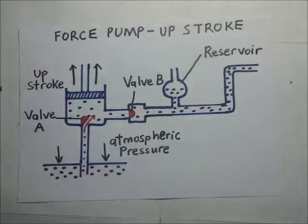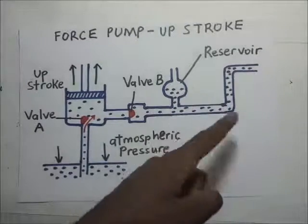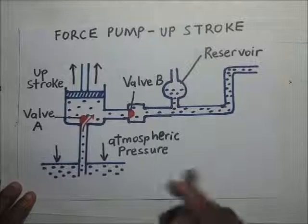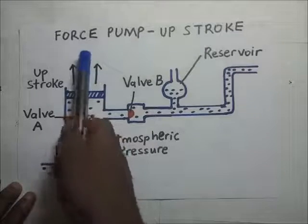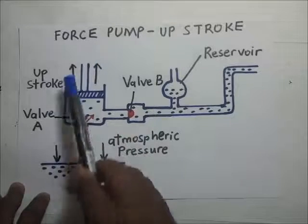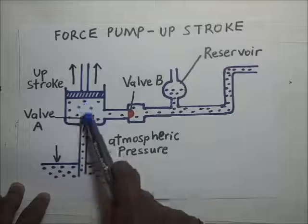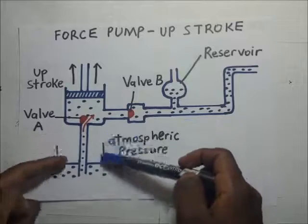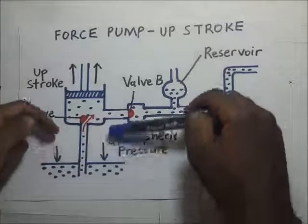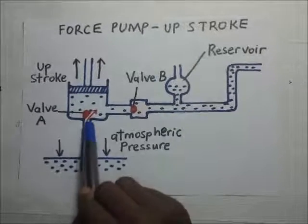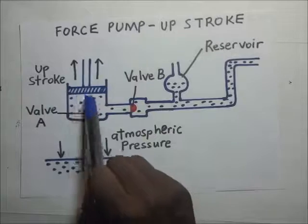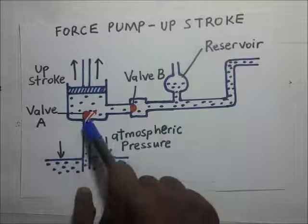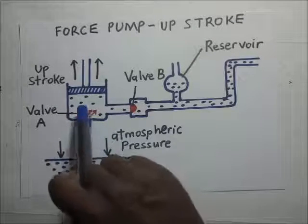We have a reservoir right there. It only ensures that we are having a steady supply of water, regardless of whatever is going on. So let's look at the upstroke of a force pump. By upstroke, I mean that this piston is moving up. When this piston moves up, the pressure on top of valve A is going to reduce, and the pressure below valve A is going to increase as a result of atmospheric pressure. So it will push this valve to open up.